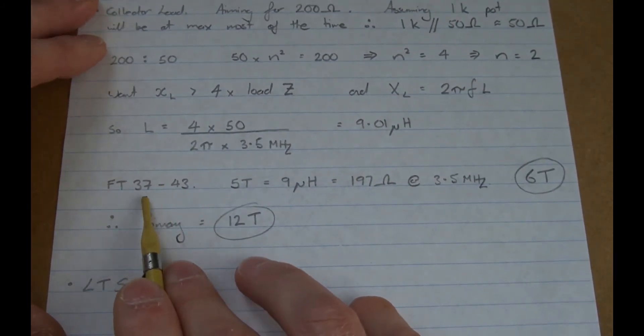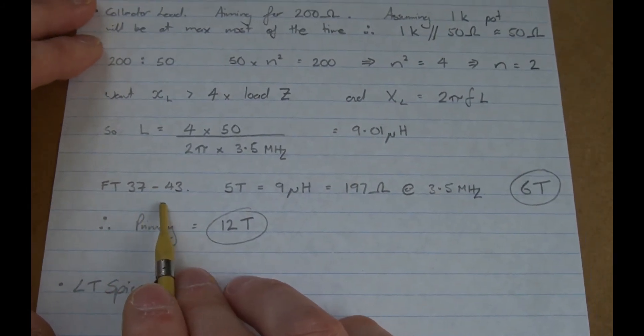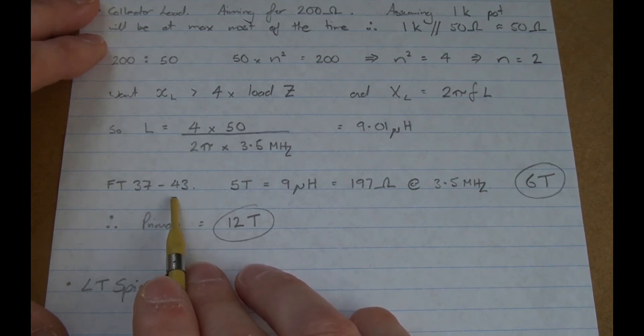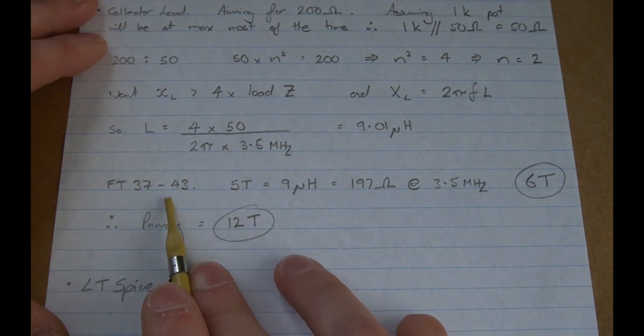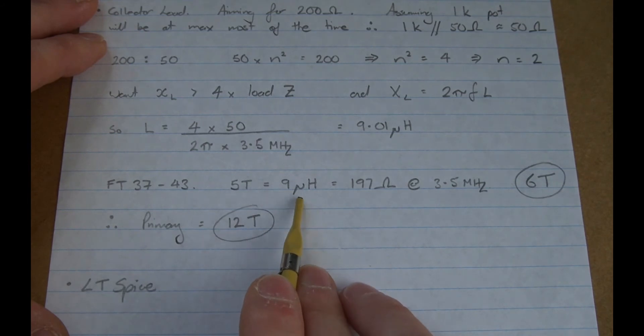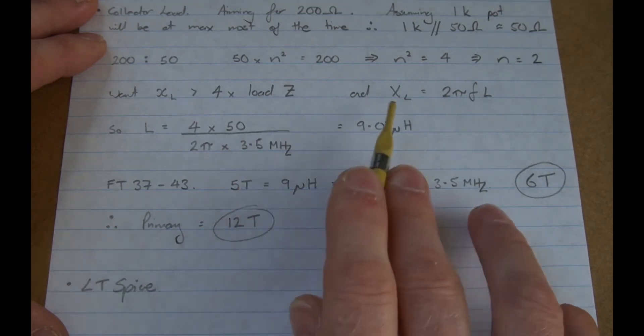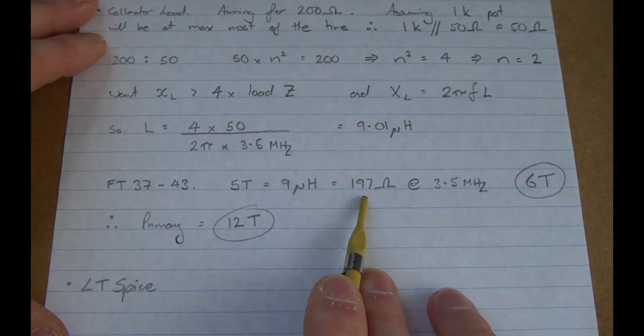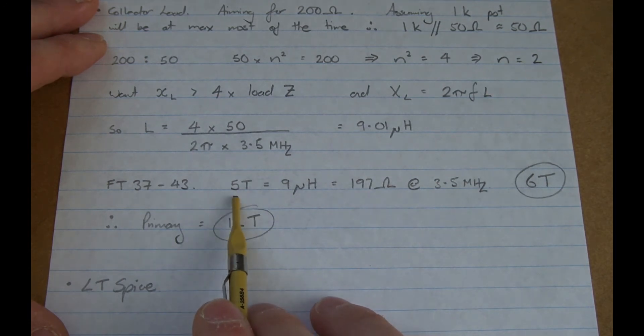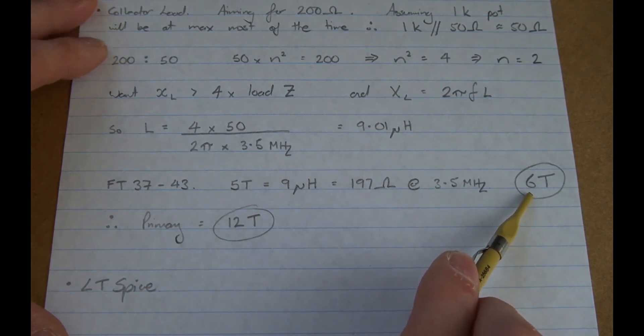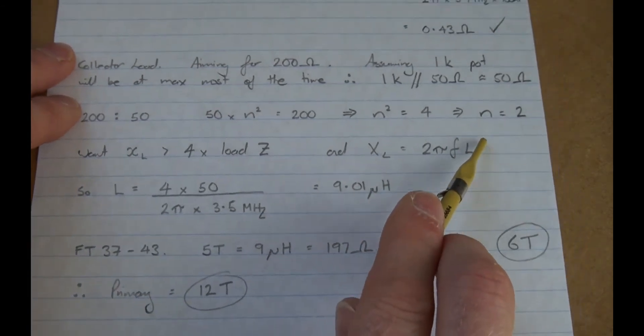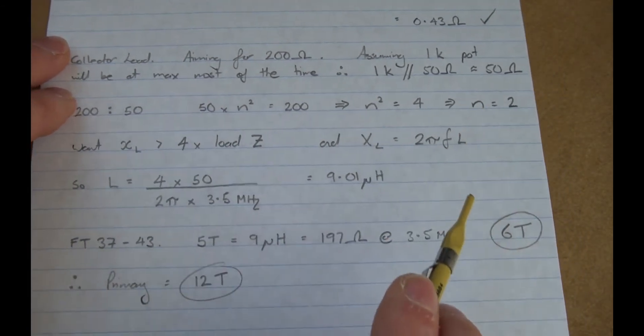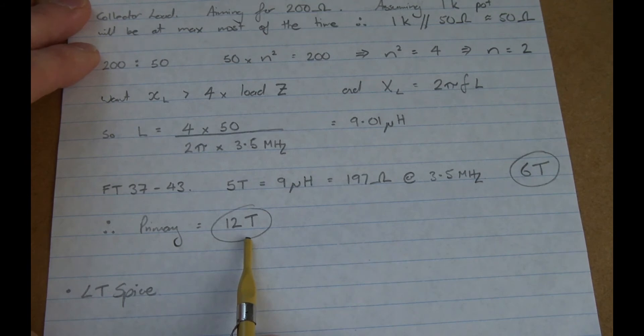And if you look at the FT37-43 specs, we know that 5 turns on an FT37-43 gives us 9 microhenries. And if you then plug that back into our equation up here, we'll get 197 ohms at 3.5 megahertz. So I'm just going to up that by one more turn. So I'm going to make it 6 turns. And we know from up here that our turns ratio is 2. So therefore I need to have a secondary of 12 turns. And that's what it is.